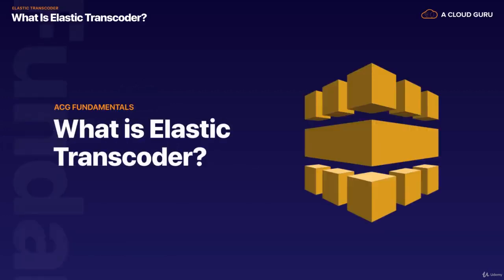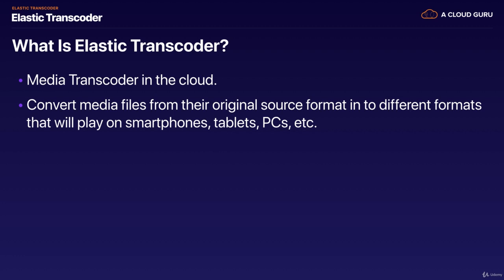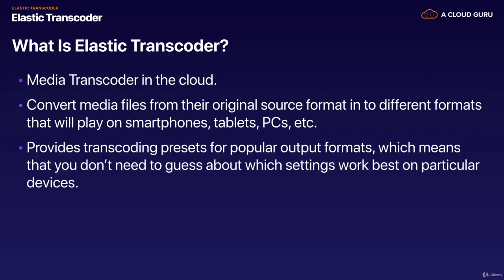So what is Elastic Transcoder? Basically, Elastic Transcoder is a media transcoder in the cloud. It's a way of converting your media files from their original source format into different formats that will play on smartphones, tablets, PCs, etc. It provides transcoding presets for popular output formats, which means you don't need to guess about which settings work best on particular devices.